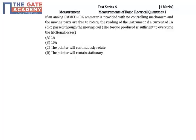If there is a controlling torque, the controlling torque will exert the same force as the operating torque so that the pointer will be settled exactly at one ampere. But since there is no controlling torque, what will happen? The pointer will continuously rotate. So the answer is C.